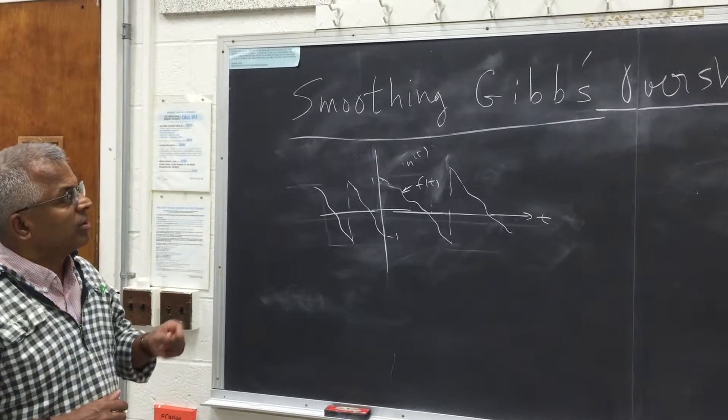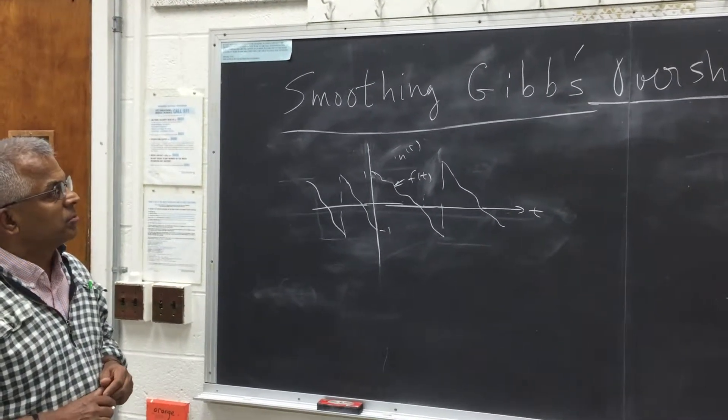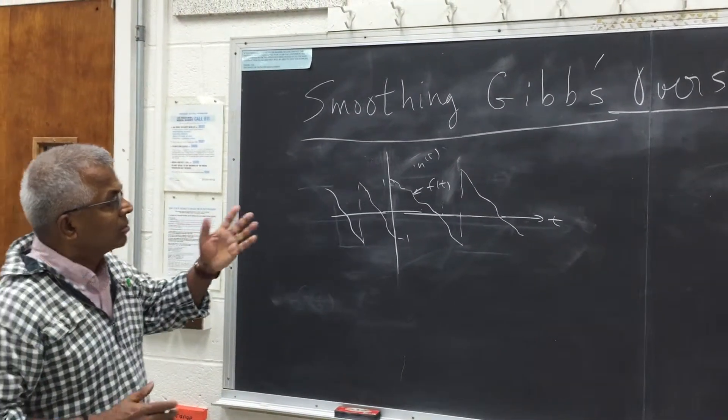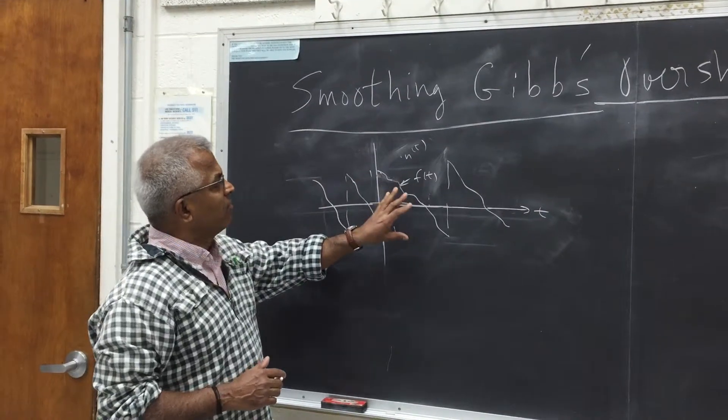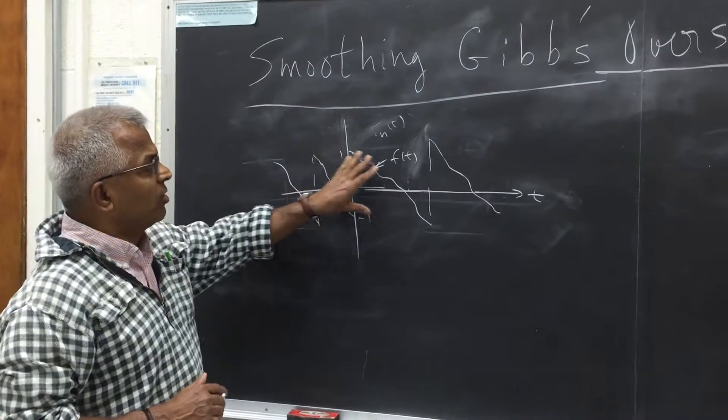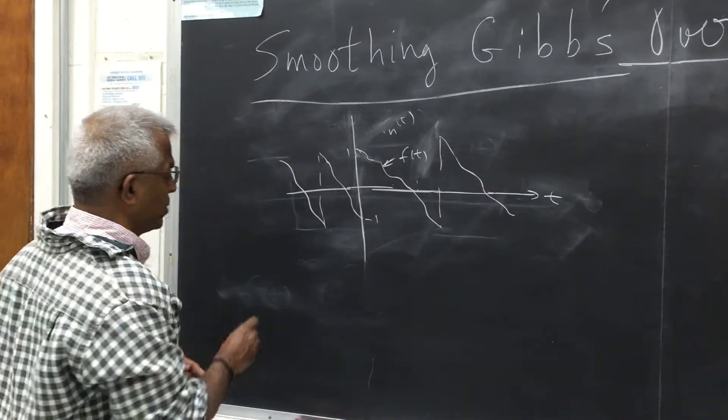So we want to briefly talk about this Gibbs phenomenon and how to smooth it. If you recall, a periodic function with jump discontinuities, a periodic function of course has a Fourier series expansion.